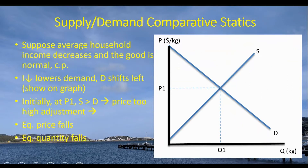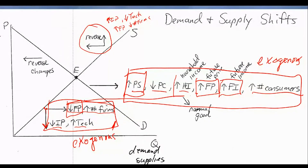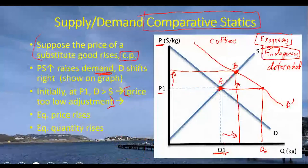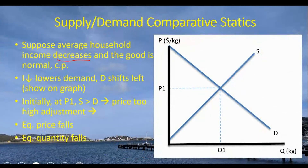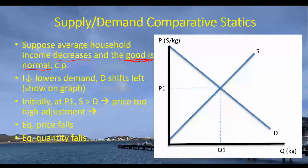To summarize: when the price of a substitute good goes up, we expect the price of coffee to rise and the quantity of coffee sold to go up as well. Next story: suppose that average household income in the community purchasing coffee decreases. Income affects demand, not supply. Given that coffee is a normal good, income has a positive relationship with demand for the product.